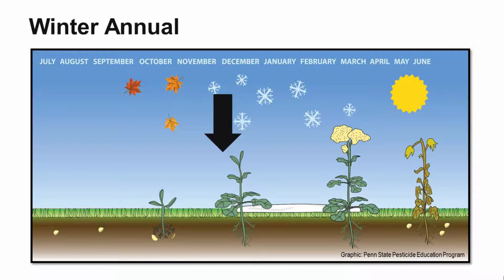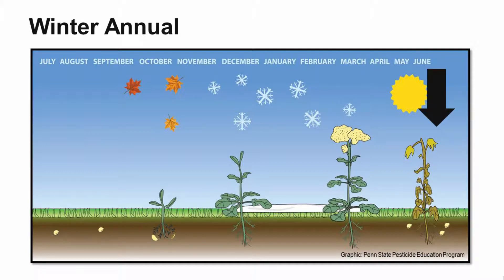The winter annual's main function is to grow and eventually produce seed. At the end of the growing season, the cold weather will not kill the winter annual — it may die back, but it's going to survive. Come early spring, oftentimes very early before anything else starts growing, the winter annual will start growing again. Its function is to grow, produce seed, and then die. It's actually the warmer weather that kills the winter annual once it has matured and produced its seed.